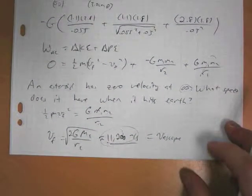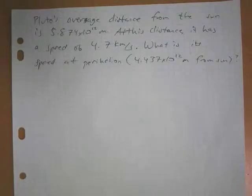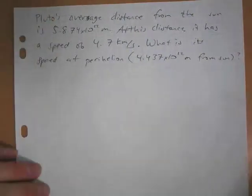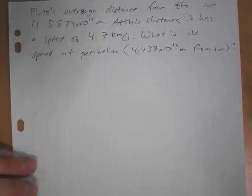Let's say Pluto's average distance from the Sun is 5.874 times 10 to the 12 meters. At this distance, it has a speed of 4.7 kilometers per second. What is its speed at perihelion, which is 4.437 times 10 to the 12 meters from the Sun?